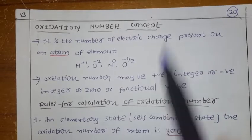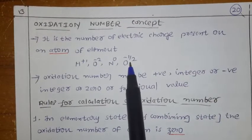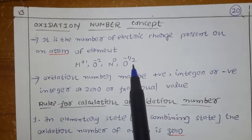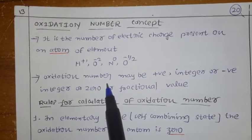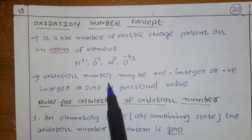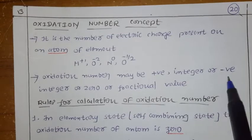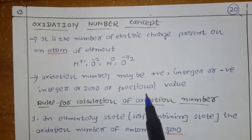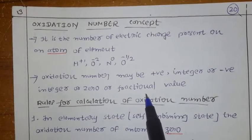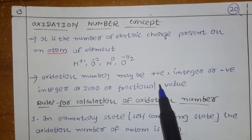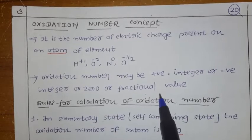For nitrogen N2, the oxidation number will come. For O, the oxidation number is minus 1 by 2. This oxidation number may be positive integer, or negative, or 0, and sometimes fraction values also will be there. So there may be positive, negative integers, or fraction values for the oxidation number.